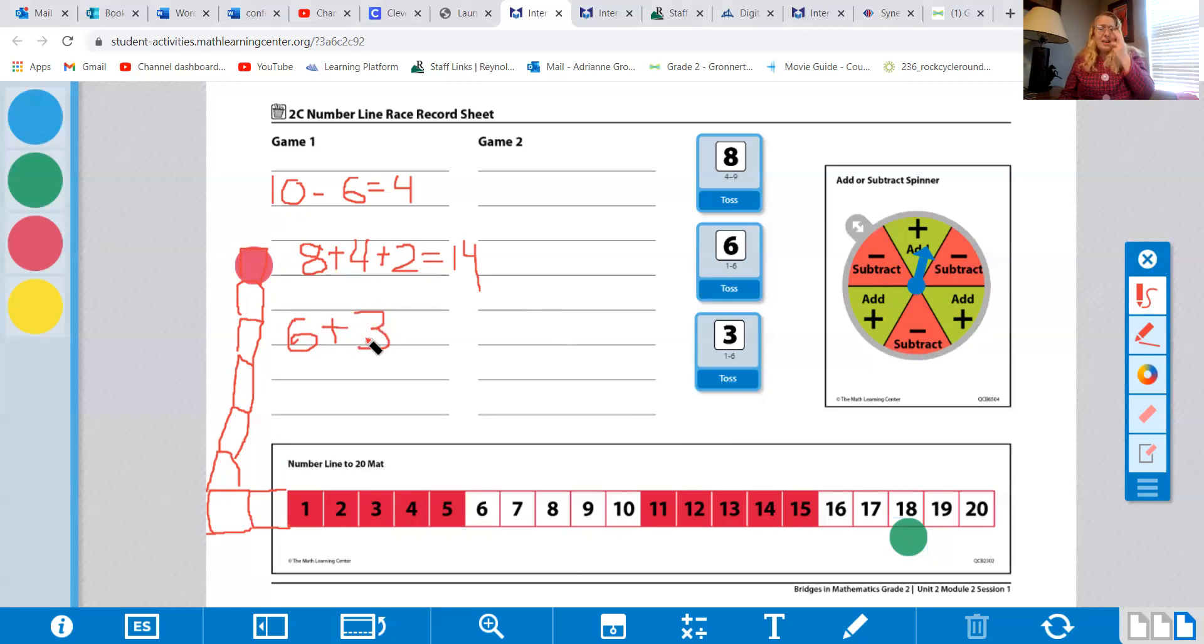That's nine, so I get to move forward nine. Where am I going to land? Let's find out. One, two, three, four, five, six, seven, eight, nine. Oh, I was so close. I'm on the number 2.